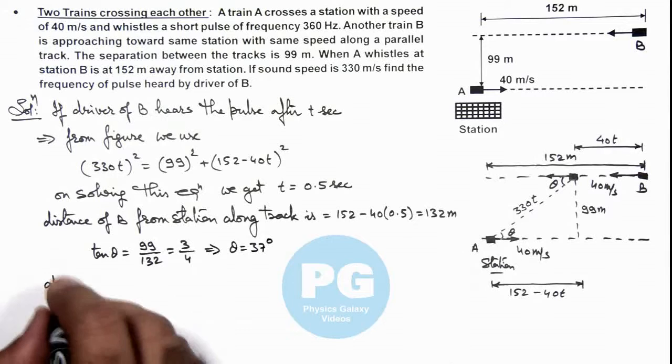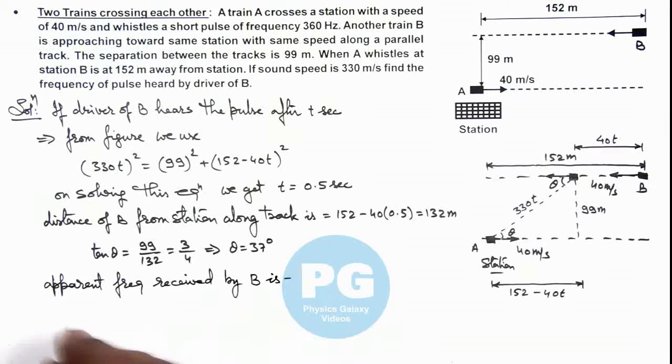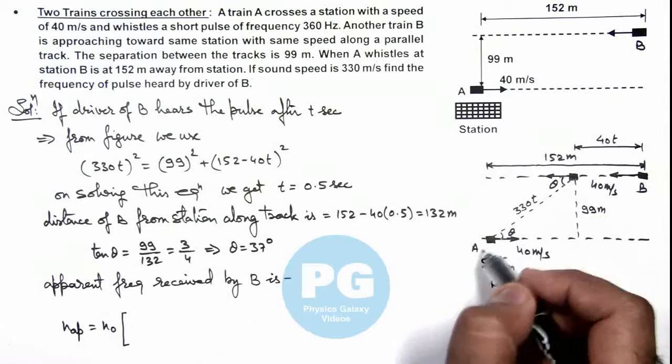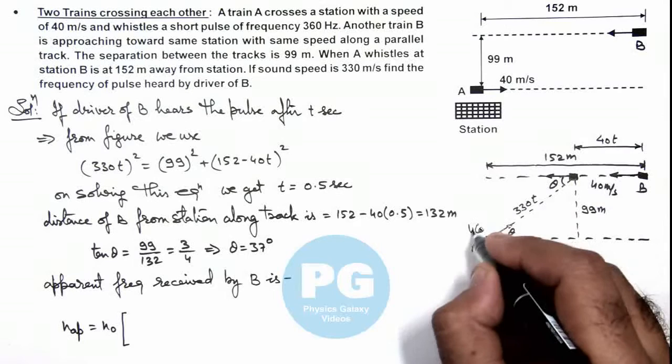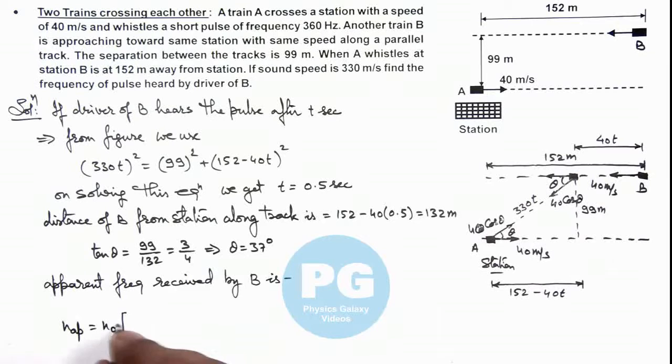So if we calculate the apparent frequency received by B, we can directly make use of the relation of Doppler's effect as n apparent equals n₀ multiplied by a factor. Here we can consider source velocity and observer velocity components along the line joining source and observer positions. So along this line we can use the component as 40 cos theta, and this will also be 40 cos theta. As source and observer both are approaching each other.